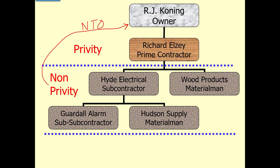We also said that subcontractors have lien rights, material men have lien rights, even material men of a sub have lien rights. Second-tier subs also have lien rights against the owner's property, providing they send a notice to owner. If they don't send a notice to owner within 45 days from first beginning work or delivering the materials, they lose their lien rights.